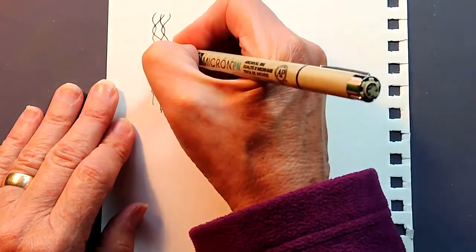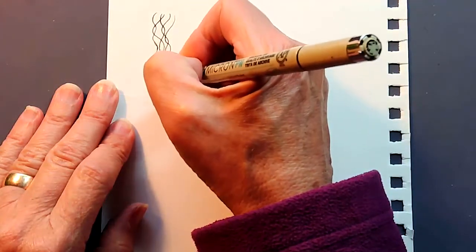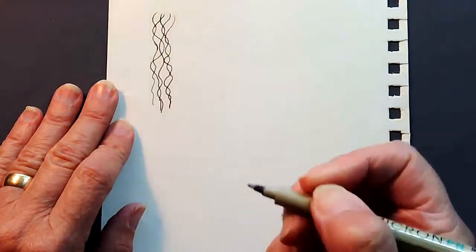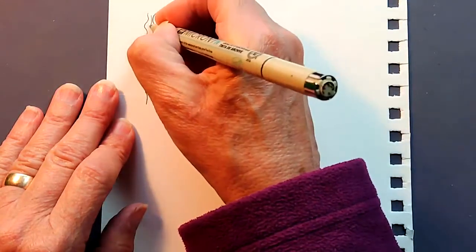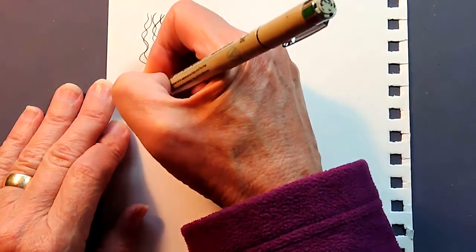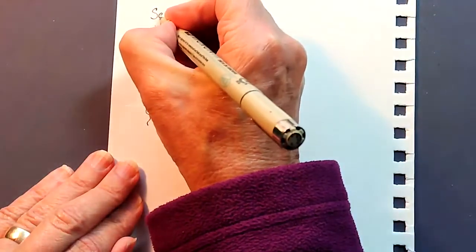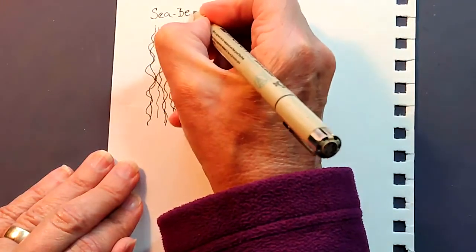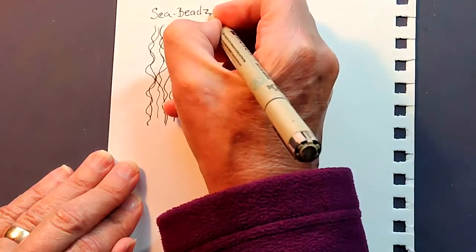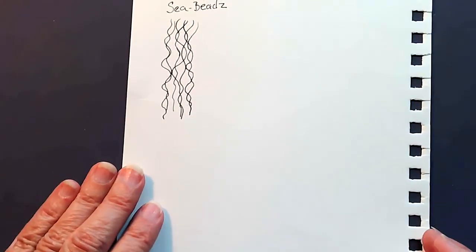And I'll spell it out and draw it in pen in a sec here, so you can see. But it's just so simple and really gratifying. I'm going to do another one over here. So just do a little sample today of sea beads and some variations. It is spelled S-E-A hyphen B-E-A-D-Z. Sea beads. And just reminds me of kelp floating in the ocean.